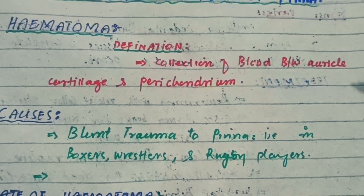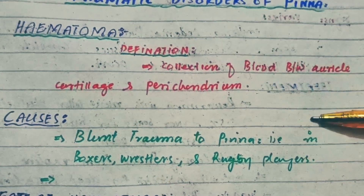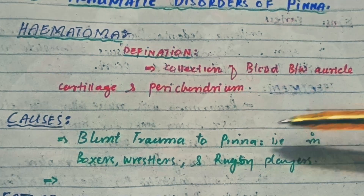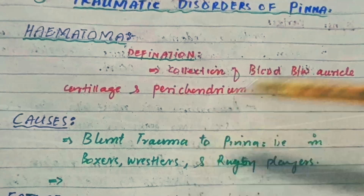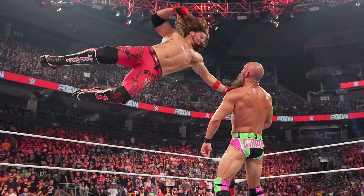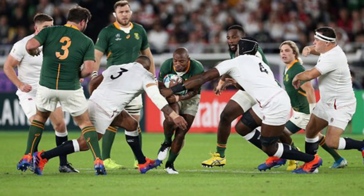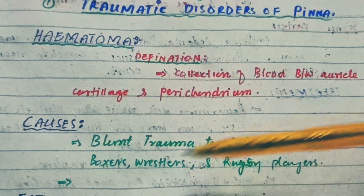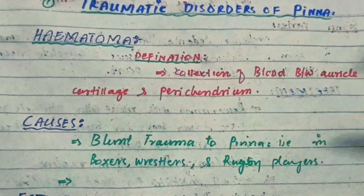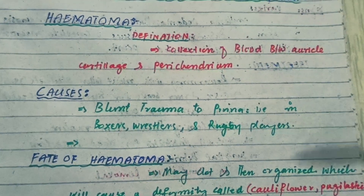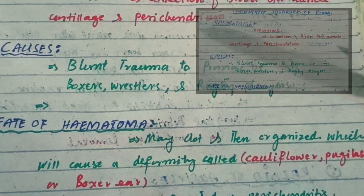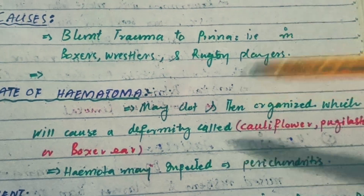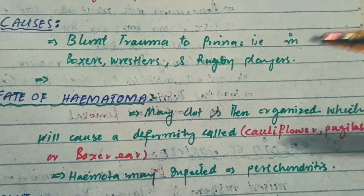Blunt trauma mostly happens to boxers, wrestlers, and rugby players, so hematoma is mostly seen in people playing boxing, wrestling, and rugby. After it occurs, the fate of the hematoma is that it may clot and then organize.